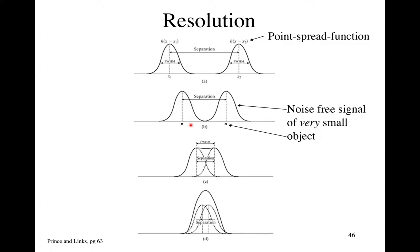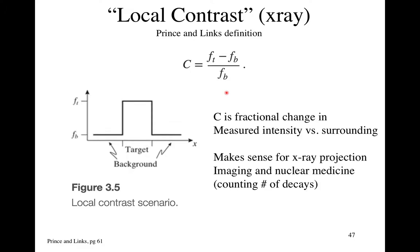Interestingly, super-resolution microscopy gets around this resolution limit by detecting events at a low enough frequency that this overlap never occurs. You get individual events detected — each one is a point spread function blob — but if it happens in isolation, you can measure where the peak is, which is where your object is. You map the center of mass of each blob, and that gives you a super-resolution image.